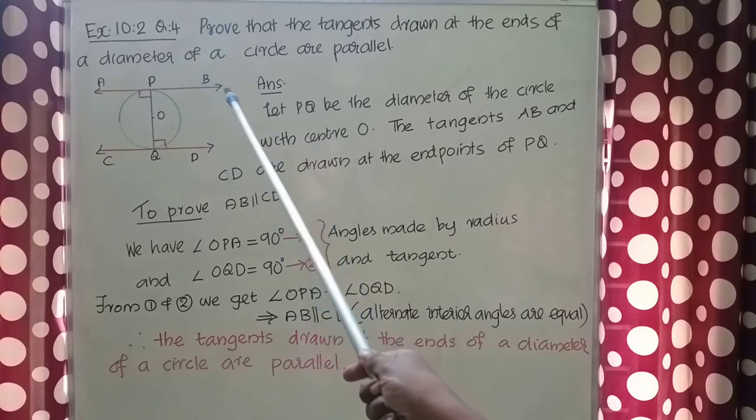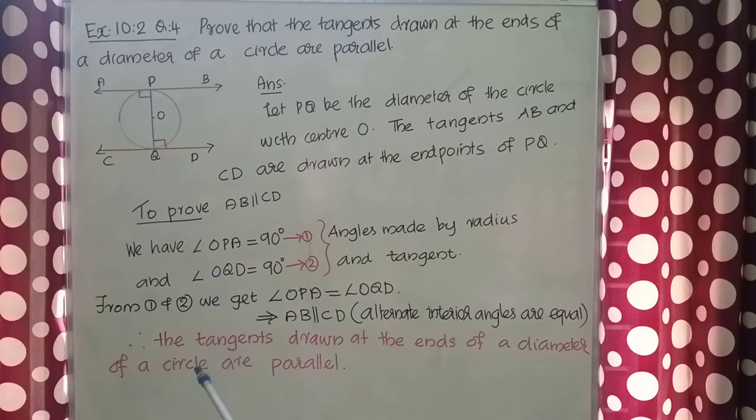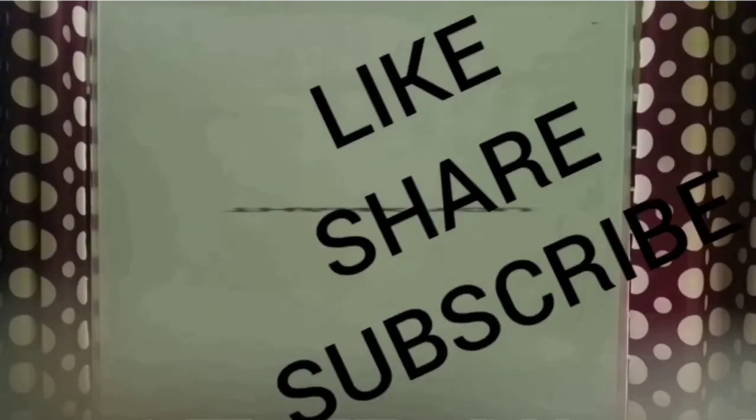In the figure AB and CD are the tangents. So we can conclude, therefore, the tangents drawn at the ends of a diameter of a circle are parallel.